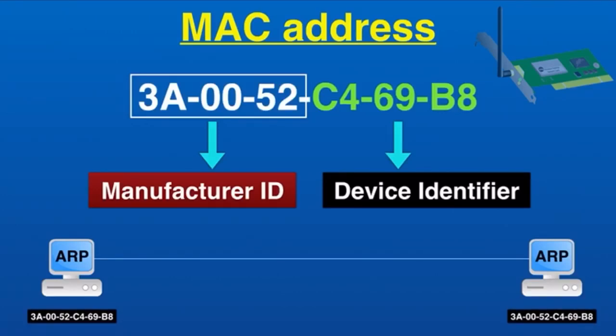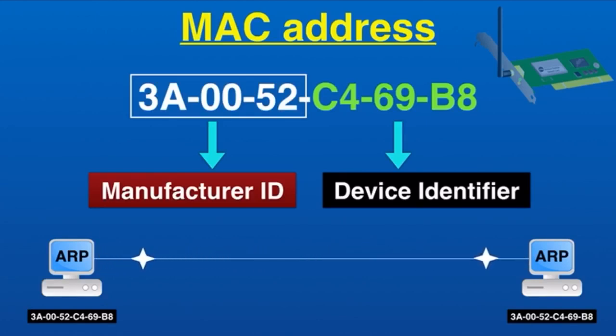The MAC address of a device is retrieved by using the ARP protocol. The purpose of MAC address is to make devices talk to each other — whenever devices want to communicate, it's done by using a MAC address, whether the devices are in a local network or over the internet.